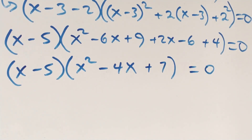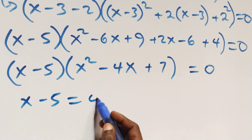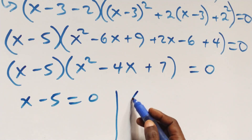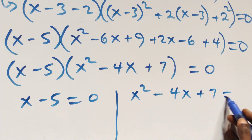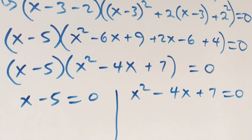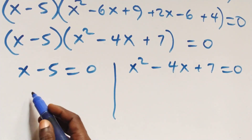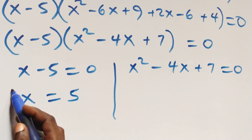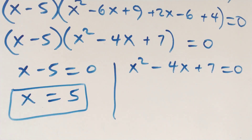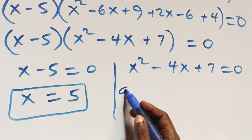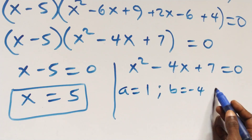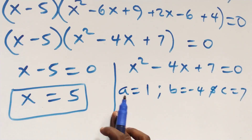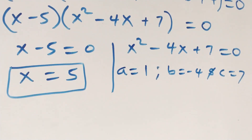Then here we have 2 possible cases as well. The first one: x minus 5, equals to 0. Or we have x square, minus 4x, plus 7, equals to 0. From here, solving on this side, we have x equals to 5, which is a real solution here. Then here we have a quadratic equation, a equals to 1, b equals to minus 4, and c equals to 7.